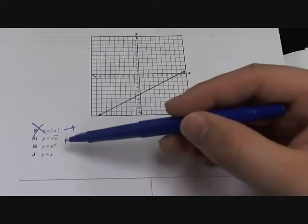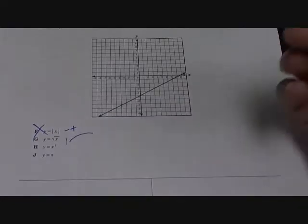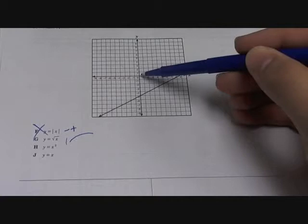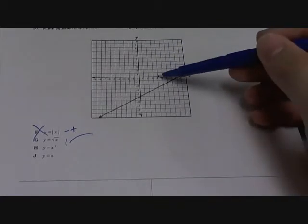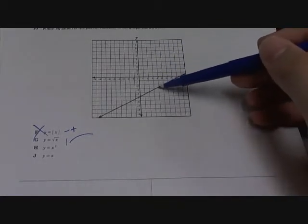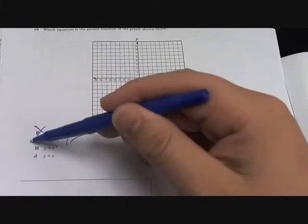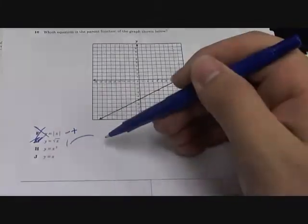If you have x equal negative number it can't be it. And we take a simple thing, so square root of 4 has to be 2 and this is not 2, so it's not it. X squared, we all know how x squared looks like.